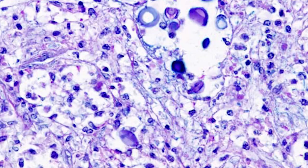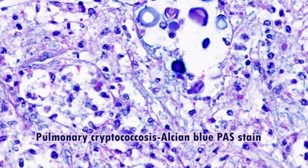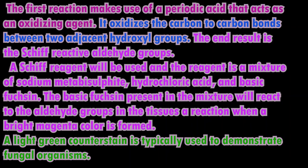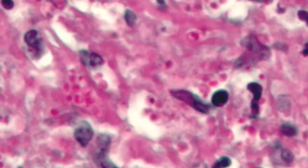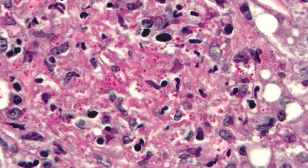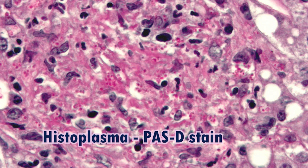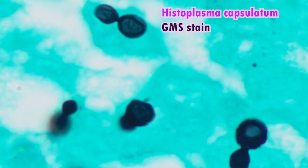PAS stain — Periodic Acid-Schiff stain — is used to detect polysaccharides such as glycogen, and mucosubstances such as glycoproteins, glycolipids, and mucins in tissues. PAS stain can be used in combination with diastase, an enzyme that breaks down glycogen. In fungal infection, the cells of fungi stain magenta.